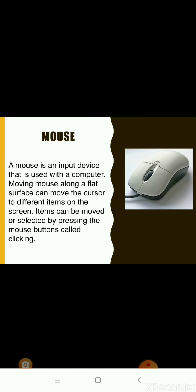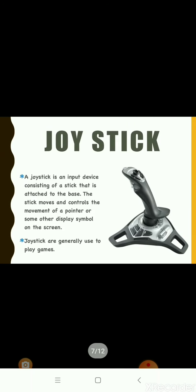A computer mouse is a handheld hardware input device. It is also known as a pointing device that controls a cursor in a graphical user interface and can move and select text, icons, files, and folders on your computer. Moving the mouse along a flat surface can move the cursor to different items on the screen. Items can be moved or selected by pressing the mouse button, called clicking.